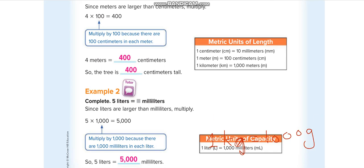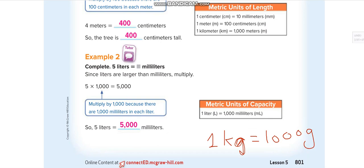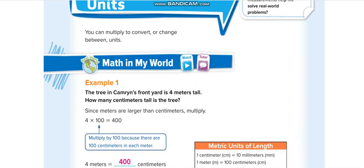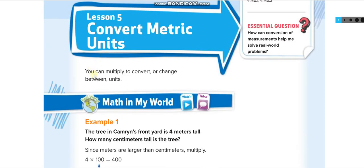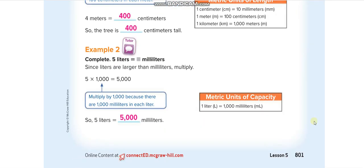Here's another example: 5 liters — how many milliliters? We are converting from liters to milliliters, so we multiply by 1,000. In this lesson we are using multiplication to convert between units. One liter is 1,000 milliliters, so 5 times 1,000 equals 5,000 milliliters.